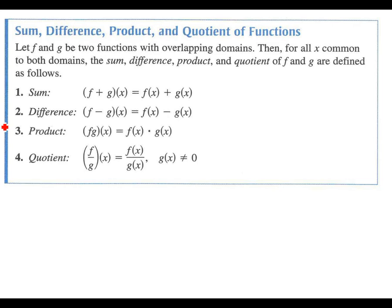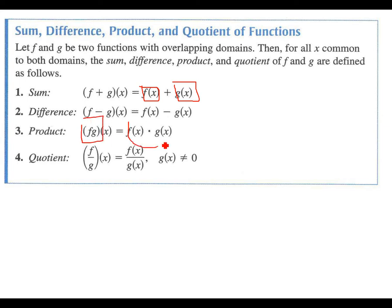So here are our different combinations. If we write it like this, we're going to take whatever our f of x function is and add it to our g of x function. That's true all the way down. If we multiply, we would multiply the two functions together.